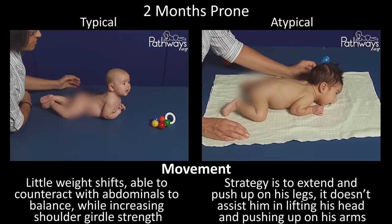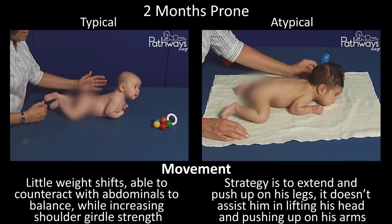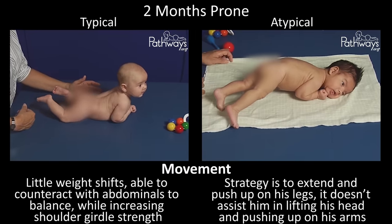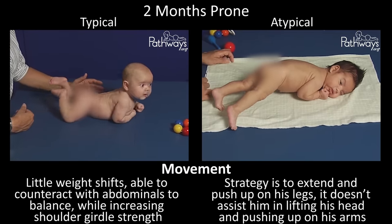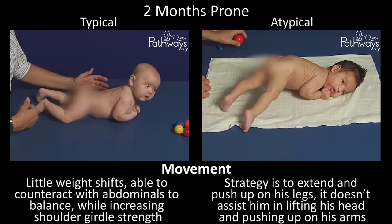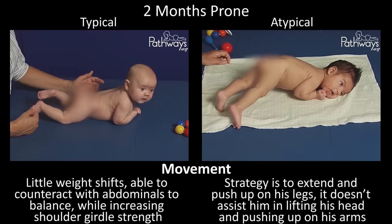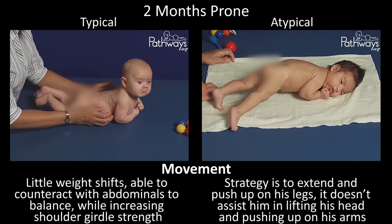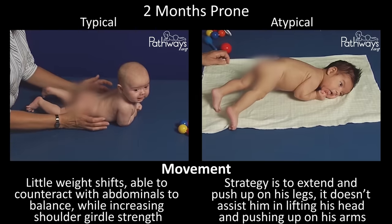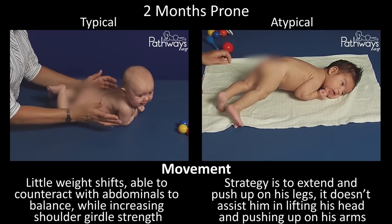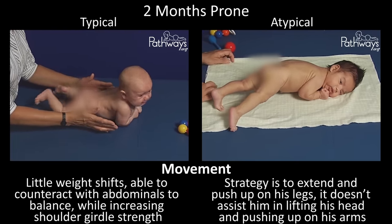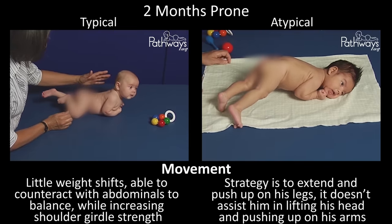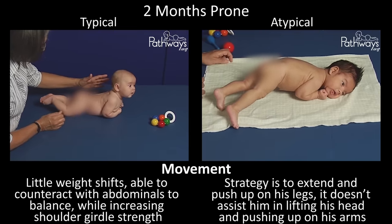Movement – Notice the baby on the left is doing little weight shifts and is able to counteract with his abdominals to balance while increasing shoulder girdle strength. Baby on the right's strategy is to extend and push up on his legs, which doesn't assist him in lifting his head and pushing up on his arms.